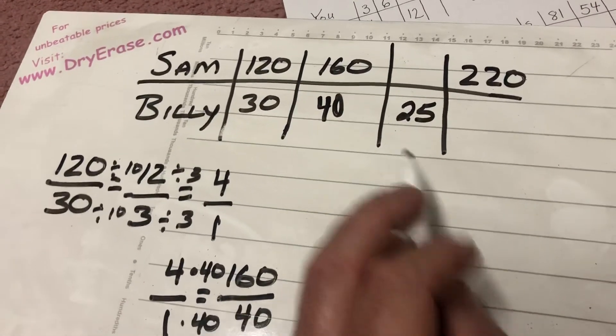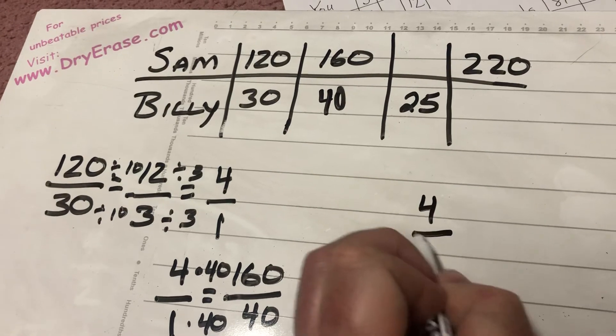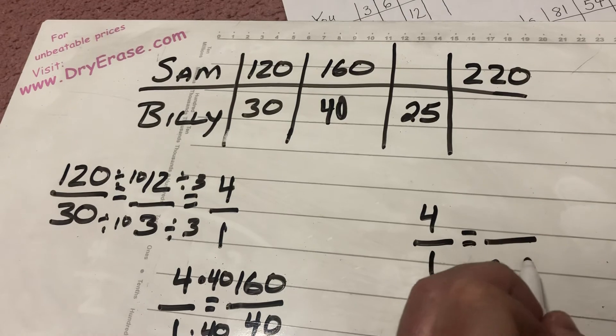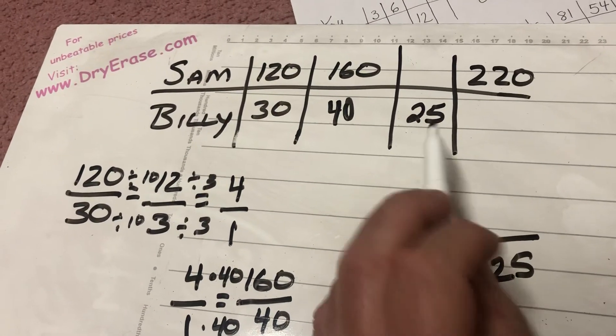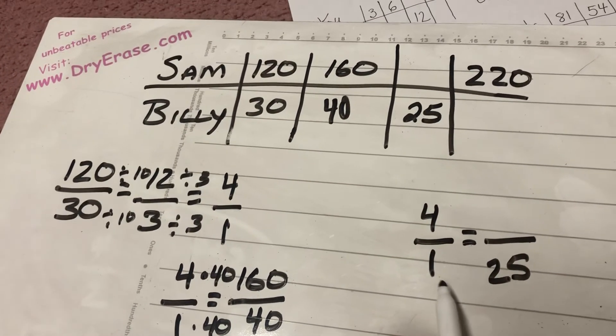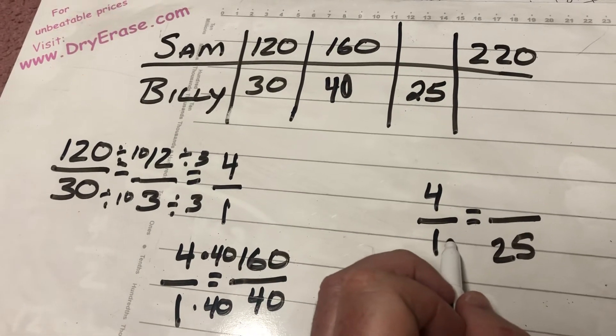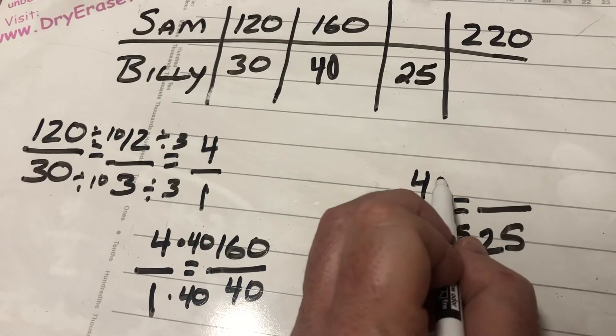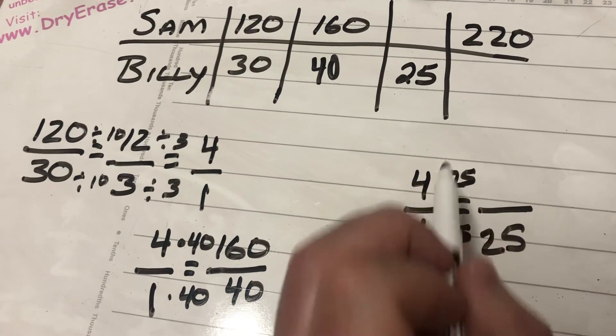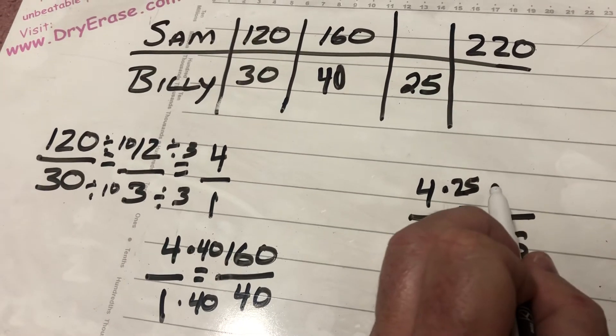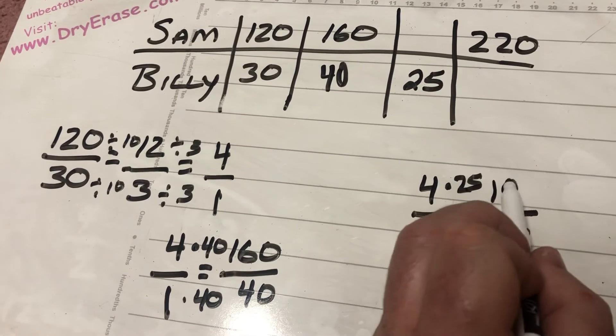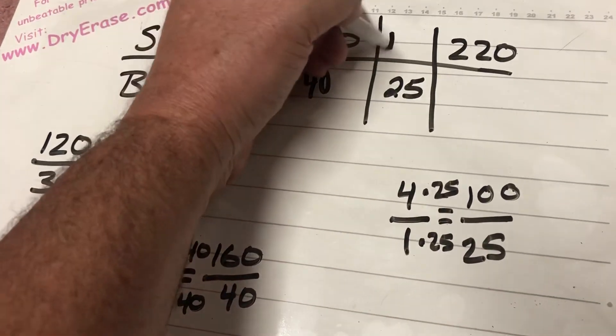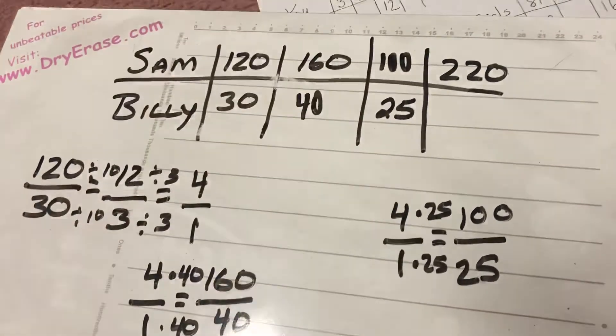Now I do the same thing with the 25. I get 4 over 1 again, because that's my simplest form ratio, equals something over 25, because 25 is now Billy's number. And I think to myself, well, what did I do to 1 to get 25? Well, I multiplied it by 25. That's not too hard. So I got to do the same thing to the 4 to get this number here. And I do 4 times 25. Well, I know that 4 quarters makes a dollar. So 4 times 25 is 100. When Billy has 25, Sam has 100.